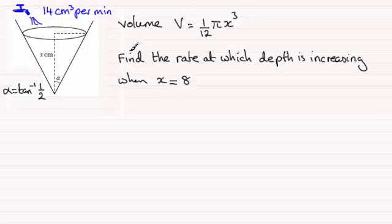And we're now being asked to find the rate at which the depth is increasing when x is 8. And this is a typical what we call connected rates of change question. Essentially what we've got to do then is to find, let's just put it down here, the rate at which the depth is increasing. That is, in other words, dx/dt when x equals 8. So that's the basic question.